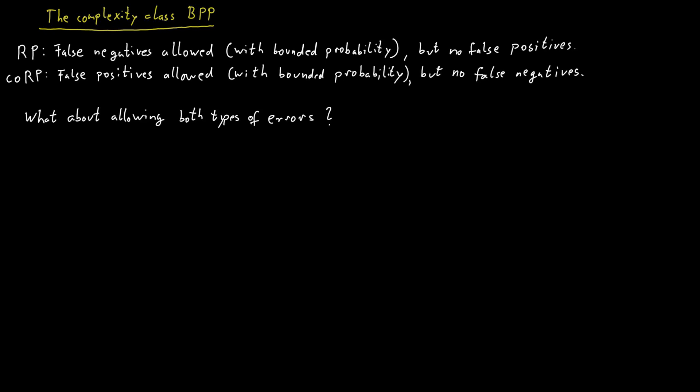Maybe not surprisingly, there is a complexity class that captures this and which allows two-sided errors. The class is called BPP, which stands for Bounded Error Probabilistic Polynomial Time.